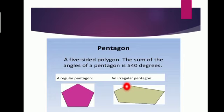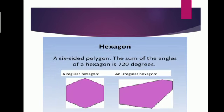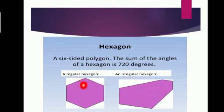This one is irregular because all sides are of different lengths. After pentagon, we have hexagon. A hexagon is a six-sided polygon. The sum of the angles of a hexagon is equal to 720 degrees. This is the regular hexagon and this is the irregular hexagon, because the lengths of all its sides are different.